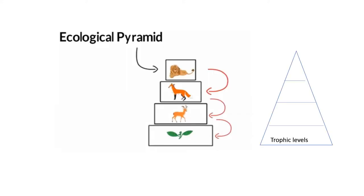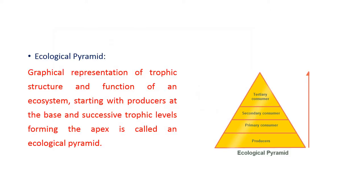In ecological pyramids, each and every part of the pyramid represents a trophic level. For example, here it is plants, here it is deer, here it is frogs, and then it is a lion. The basal part of the pyramid is generally maximum in number and is occupied by the producers. The next trophic level is occupied by the primary consumers, then secondary, and then tertiary.